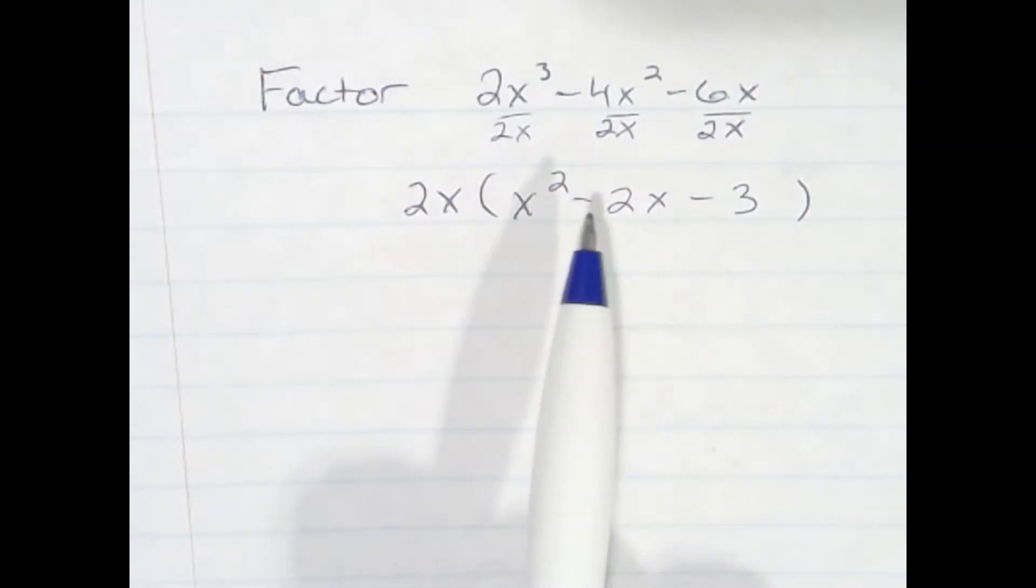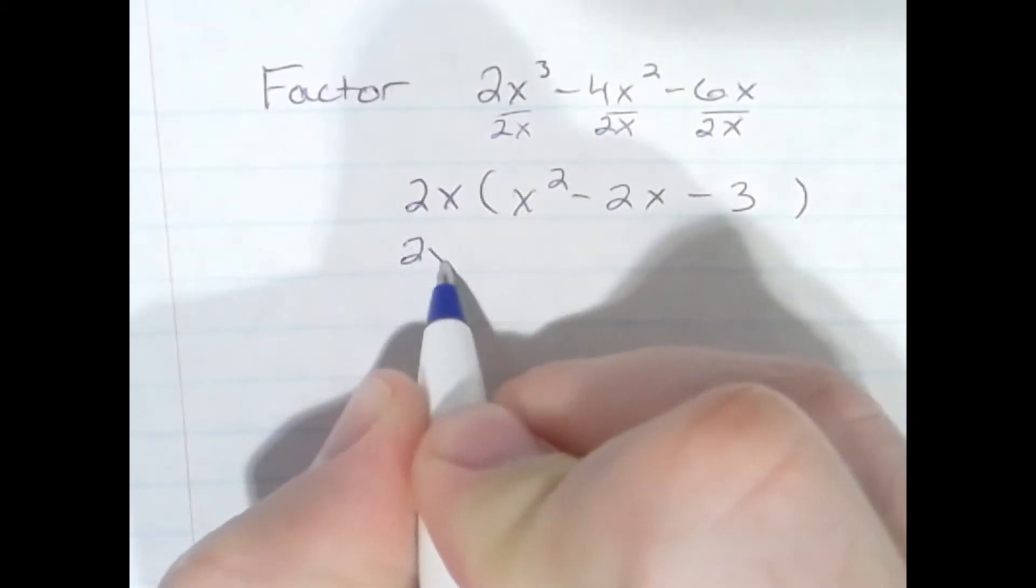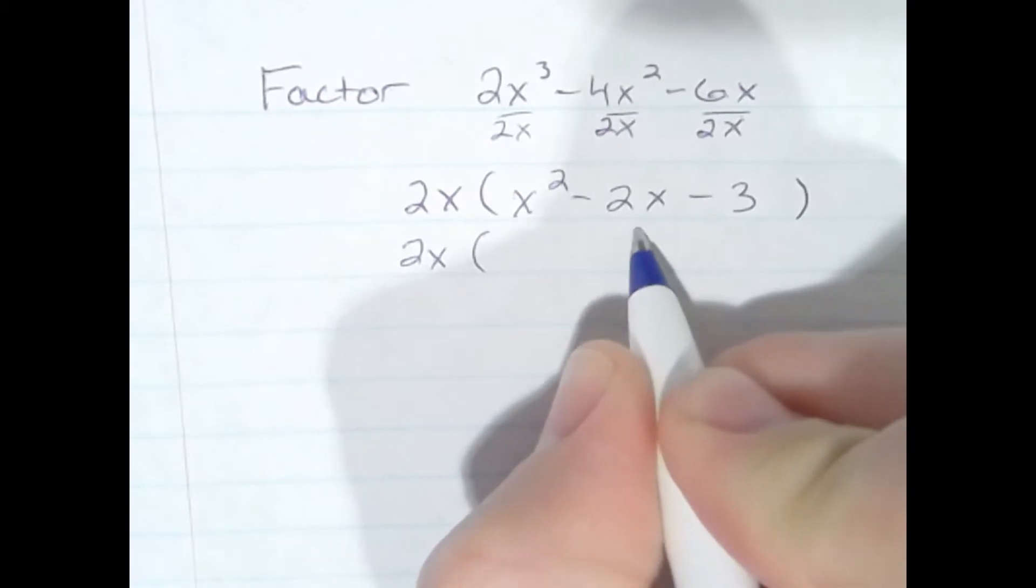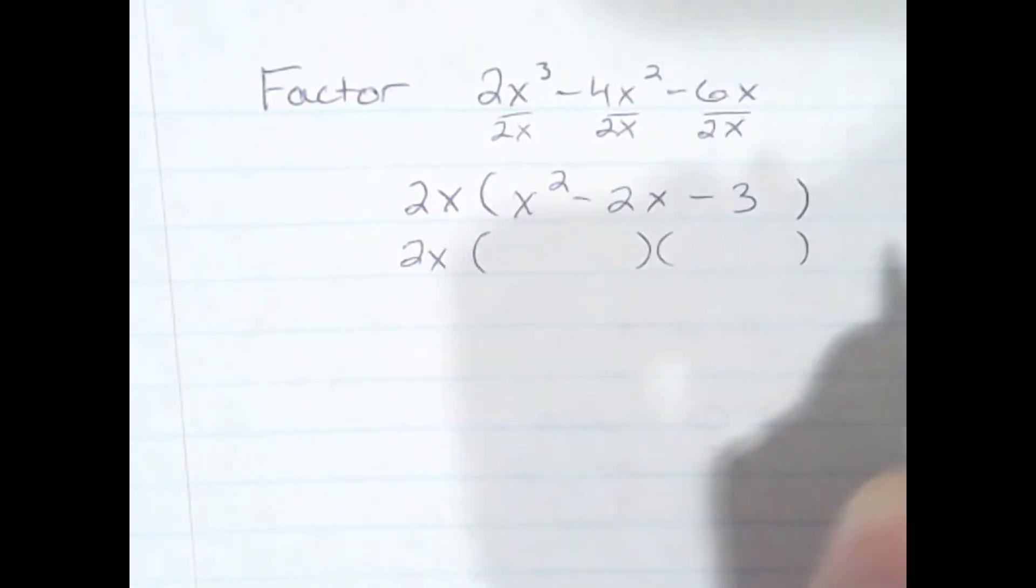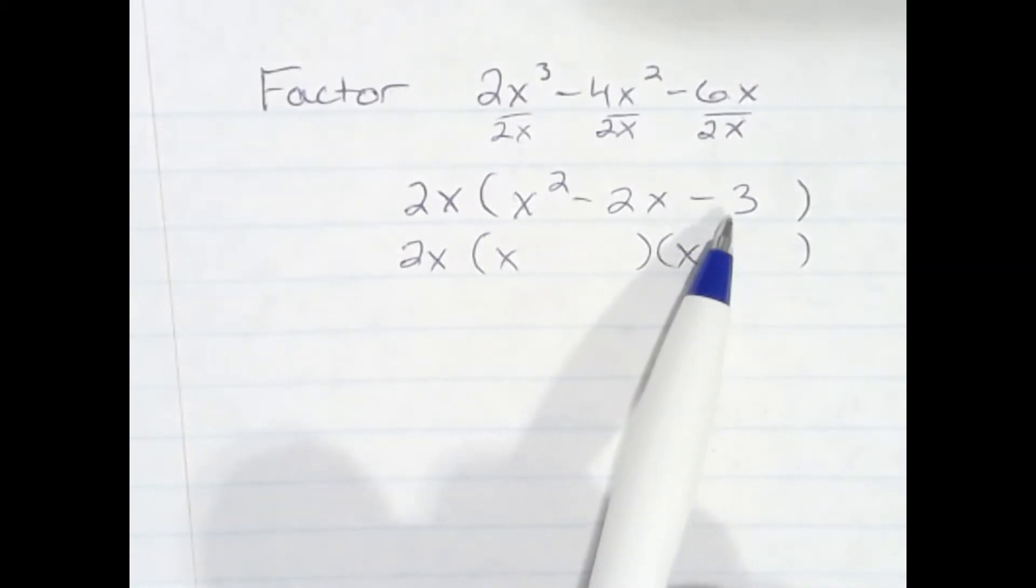What we have left is another quadratic trinomial, and it turns out it can be factored even further. So we've already factored out 2x. I'm just going to set up the answer here for the rest of the factoring. X and x ourselves is what factors of negative 3 add up to negative 2.